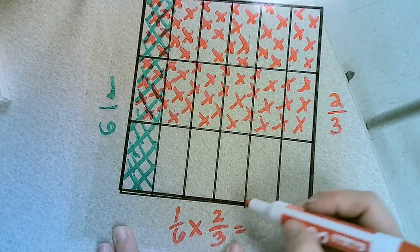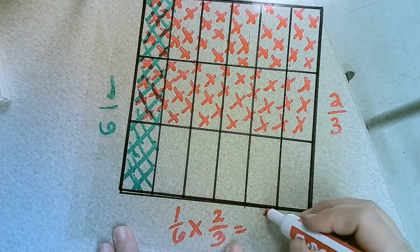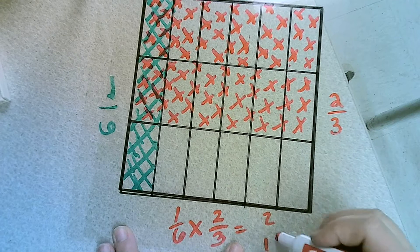We multiply straight across. 1 times 2 is 2. 6 times 3 is 18.